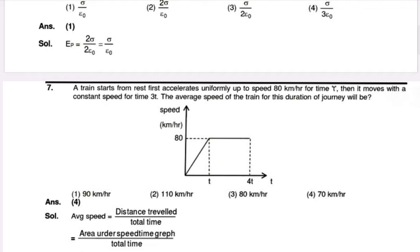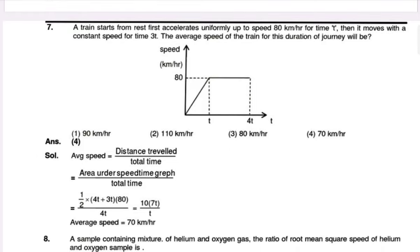A train starts from rest, first accelerates uniformly up to a speed of 80 km per hour for time t, then moves with a constant speed for time 3t. The average speed of the train for this duration of the journey will be 40 km per hour.